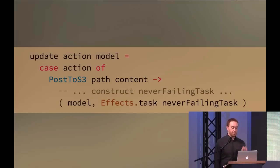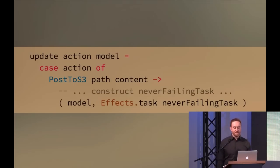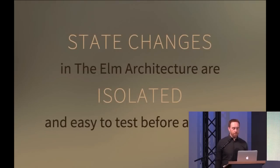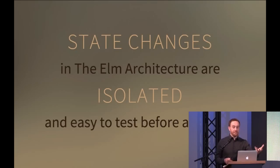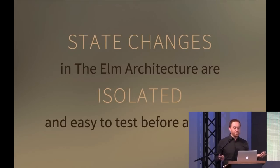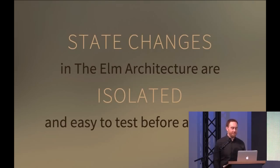Here is `runAction` translated into the Elm Architecture, renamed to `update`. It takes an action and the old model. Case expression same as before — `PostToS3` same as before, construct our never-failing task same as before — except now we return a tuple. A tuple in Elm is a fixed-length array where each position can hold different types, enforced at compile time. We return two things: the new model (in this case the same model, but this is where state changes happen) and `effects.task`. State changes are now isolated and easy to test — call your update function with the old model, look at the new model in the tuple.